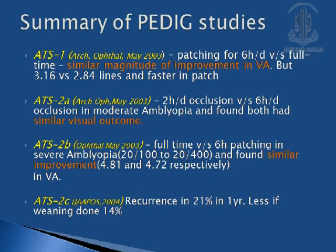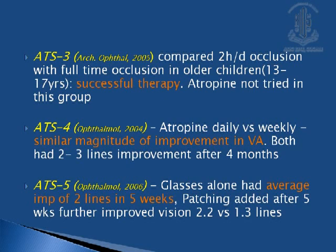PEDIG has done several studies regarding timing and dosage of occlusion. ATS-1 studied 6-hour versus full-time patching and found similar magnitude of improvement in visual acuity. ATS-2A compared 2-hour versus 6-hour occlusion per day and found similar visual outcomes. ATS-2B compared full-time versus 6-hour patching in severe amblyopia and found similar improvement. ATS-3 compared 2-hour with full-time occlusion in older children with successful results. A study of atropine daily versus weekly also found similar magnitude of improvement. The overall conclusion was that whether you give full-time or part-time occlusion, it should be given, and the child is going to improve in the long term.